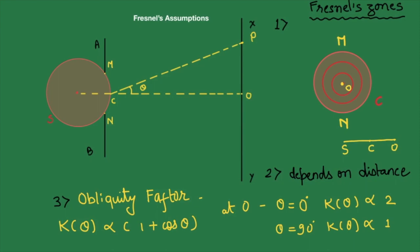Then if we want to see the effect in backward direction, theta would be 180 degrees. Cos of 180 is minus 1, plus and minus 1 will cancel out and this would be proportional to 0. So obliquity factor takes care. Obliquity factor proves that there cannot be any backward travelling wave.